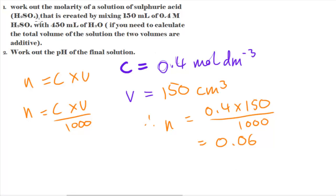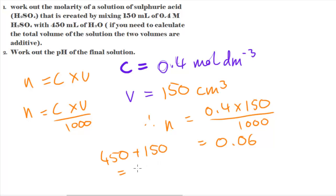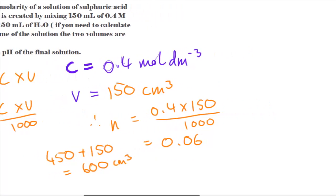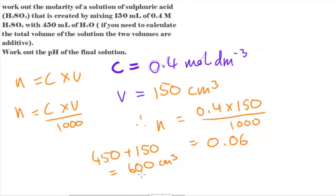So that's the number of moles of H2SO4 in the original solution. Now I need to find the concentration of the final solution, and for that I need the total volume. The total volume equals 150 plus 450 — since the volumes are additive — giving 600 cm³.